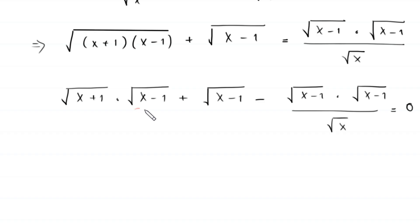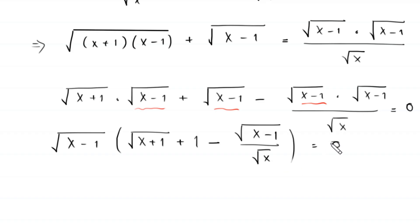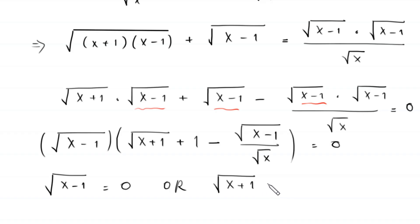Now we can factor out root (x minus 1). So, root (x minus 1) is a common factor. From here we are left with root (x plus 1) minus root (x minus 1) minus root (x minus 1) over root x, from here, is equal to 0. And by using the zero product rule...